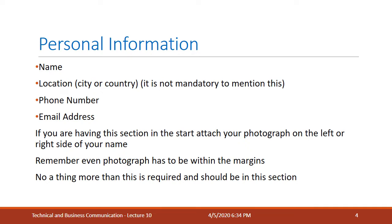You do not need to write detailed information like your house number or street number. Provide a phone number you're comfortable receiving calls on, and a valid email address. You do not need your CNIC number, your passport number — nobody wants to know whether you're married or not. If they want that information, they will give you a form to fill out. In a CV, mention only these four essentials, nothing more.